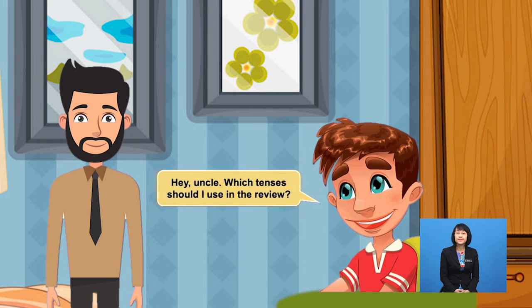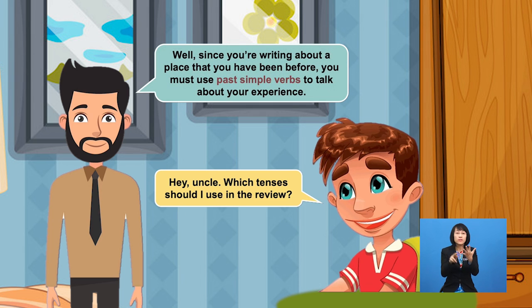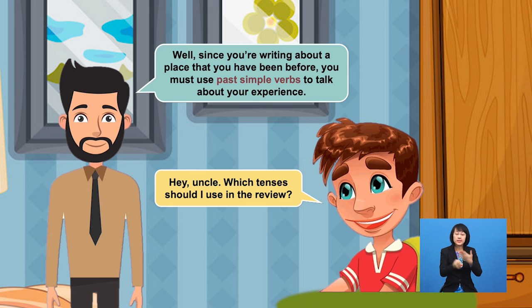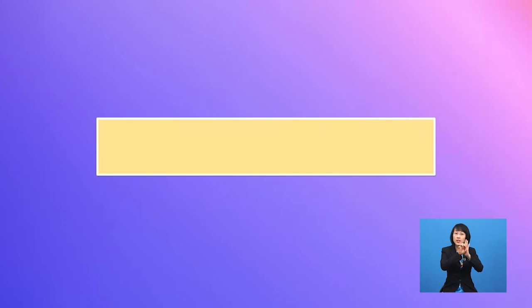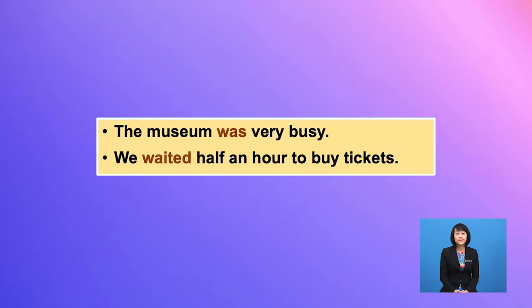Hey Uncle, which tenses should I use in the review? Well, since you are writing about a place that you have been to before, you must use past simple verbs to talk about your experience. For example: 'The museum was very busy. We waited half an hour to buy tickets.'